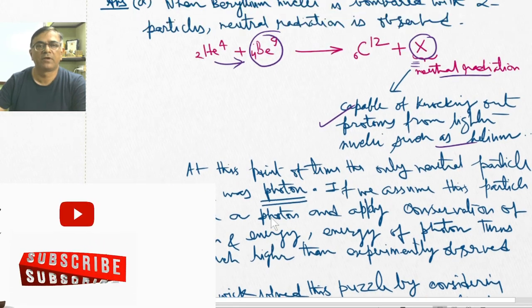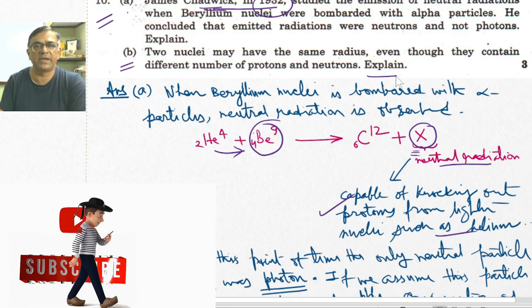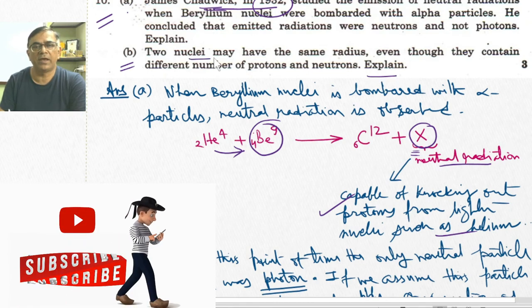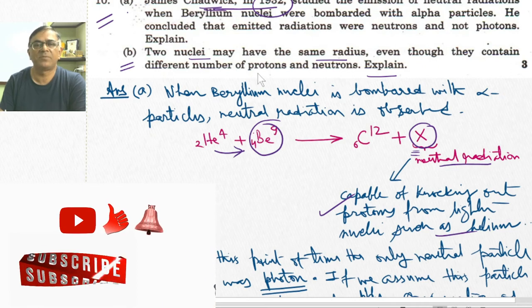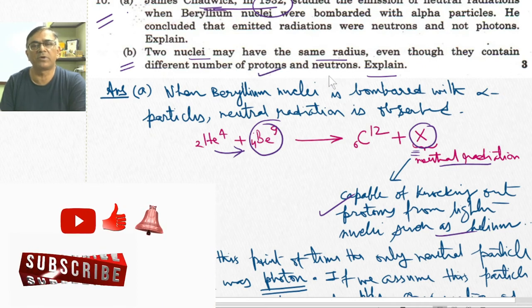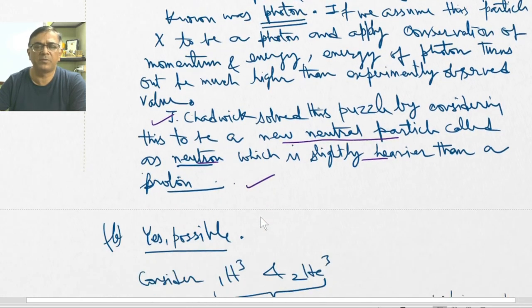Now let's come to part B of the question. In this problem, we are supposed to explain how two nuclei can have the same radius with different numbers of protons and neutrons. Yes, it is very much possible. I will give you an example.